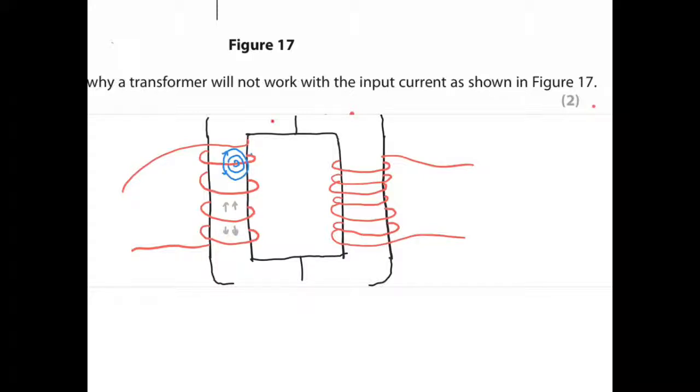One way then the other way and when that happens, that feeds around to this side, one way then the other way, and that has an impact on the electrons in the wire causing them to move one way then the other way.